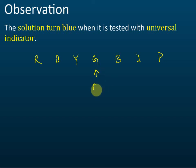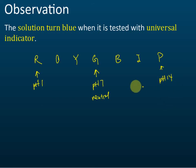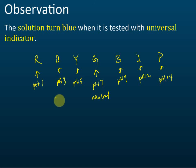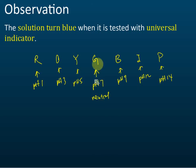When the universal indicator is green, the pH is 7, which means neutral. When it is red, the pH is 1. When it is purple, the pH is 14. Blue is about pH 9, and indigo is about pH 11 or 12. Yellow is about pH 5, and orange is about pH 3. pH 7 is neutral, less than 7 is acid, and more than 7 is alkali.